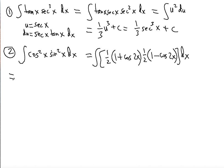Let's distribute and simplify the integrand. We keep one-fourth outside since one-half squared is one-fourth, then multiply (1 + cos 2x)(1 − cos 2x). The middle terms cancel, giving us one-fourth times (1 − cos squared 2x).